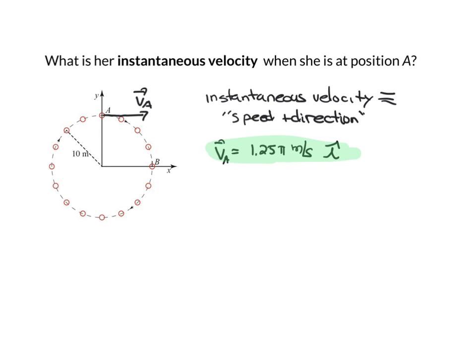And of course, at the end of her trip when she's at point B, her instantaneous velocity is of the same magnitude, but now it is pointed in the minus j-hat direction. So that's it for this worked example. Hope to see you again soon. Bye-bye.